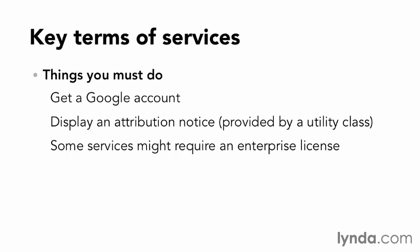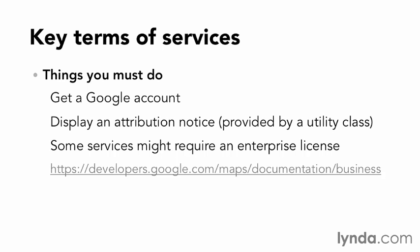Some of the services you might want to use, such as geocoding or getting directions, might require an enterprise license. All of these services are free up to a certain point — for example, an app can have up to 2,500 geocoding requests per day, but after that, an enterprise license might be required. If you're not sure, or if you know you need an enterprise license, check the documentation at developers.google.com/maps/documentation/business.